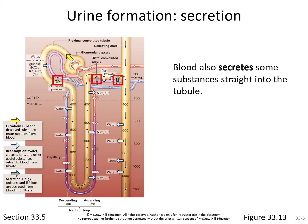Blood secretes some substances straight into the tubule — things that wouldn't necessarily leave at the glomerulus. The red box on the left lists hydrogen ions, drugs, and poisons. This is why someone can fail a urine test: many drugs and poisons can leave the bloodstream in the vicinity of the proximal convoluted tubule. Both hydrogen and potassium also get secreted into the tubule. The main reason to secrete hydrogen into the tubule is to decrease the acidity of the blood.